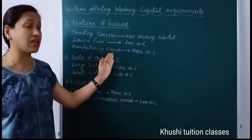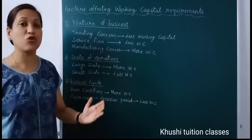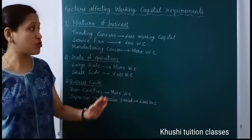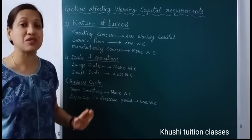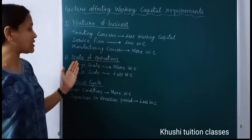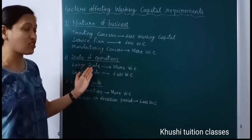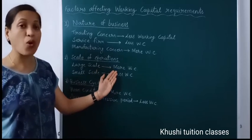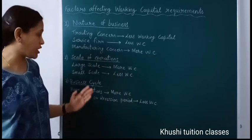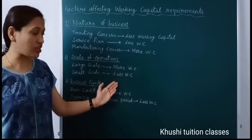Manufacturing concerns need more working capital because they do production, so they need to maintain stock of raw material, and comparatively they need a substantial amount of working capital. The second factor is scale of operation — if your activities are on a large scale then you need more working capital, but if the same activity is operated on a small scale then the firm needs less working capital.